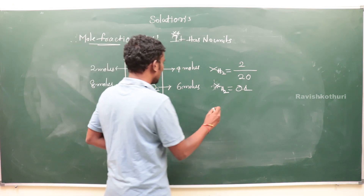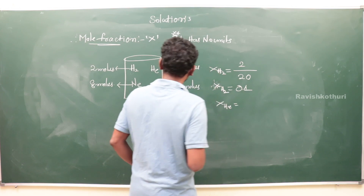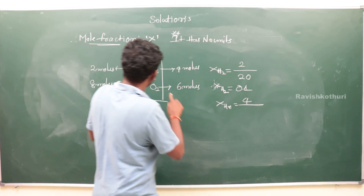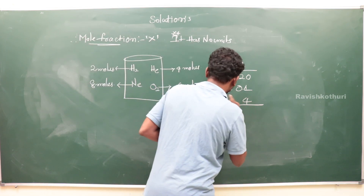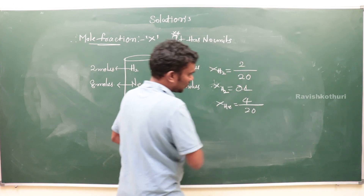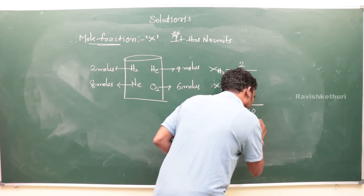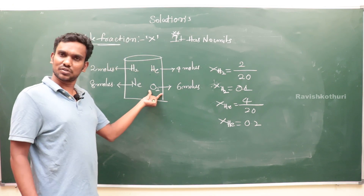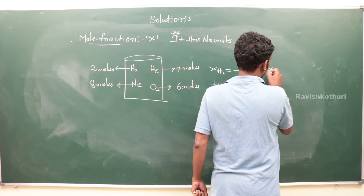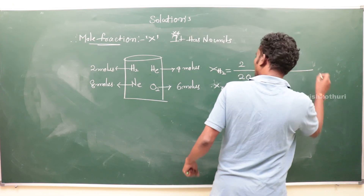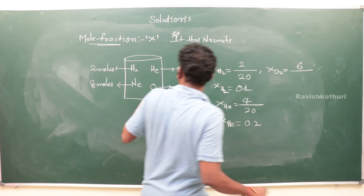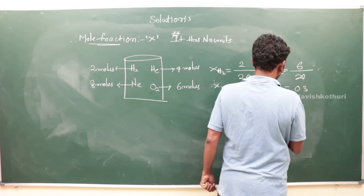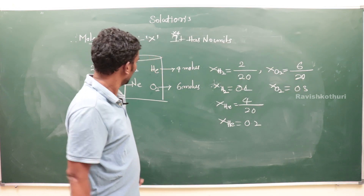Mole fraction of helium = 4 divided by total 20 = 0.2. Mole fraction of oxygen = 6 divided by 20 = 0.3.